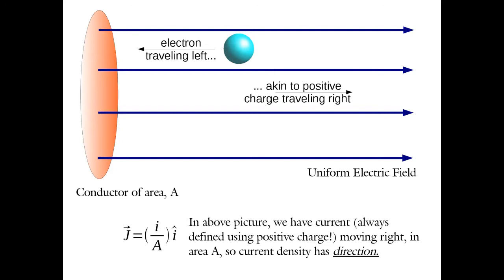Positive charge moving this way induces a current density J. Current density is a vector, and it points in the same direction that the positive v-drift points. We'll call this negative v-drift to distinguish it from the velocity with which the positive charge is moving to the right. This current density points in the same direction as v-drift — the direction positive charge is moving is the direction of positive current density.